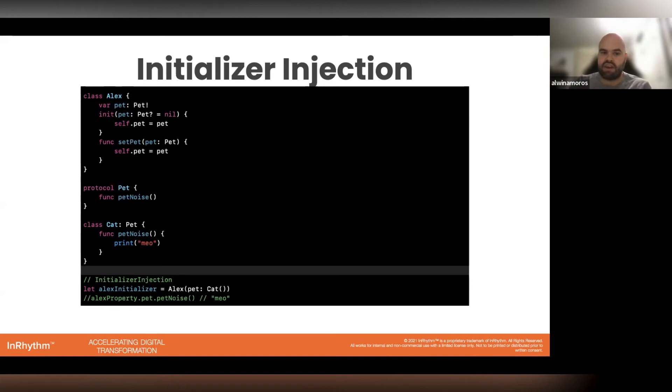It's either passing it through the initializer, assigning it to the variable after you instantiate the class, or you can pass in the object and assign it through the method setter.